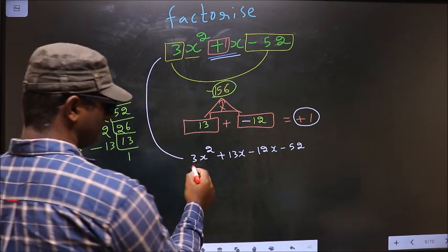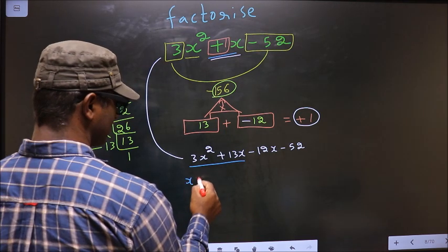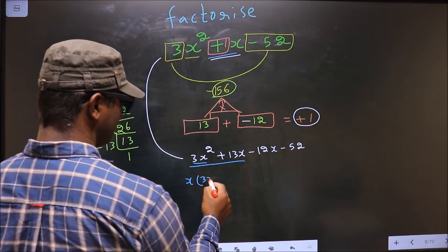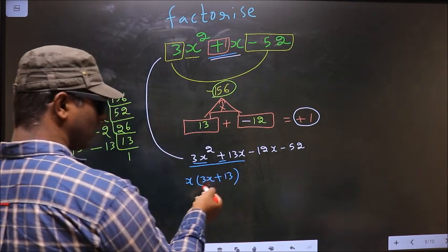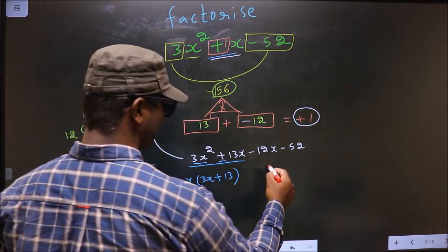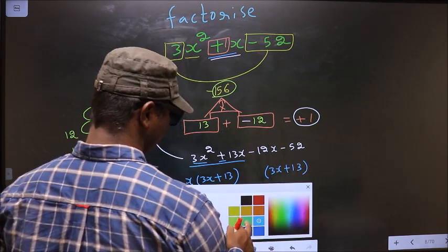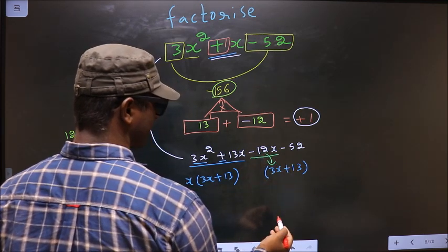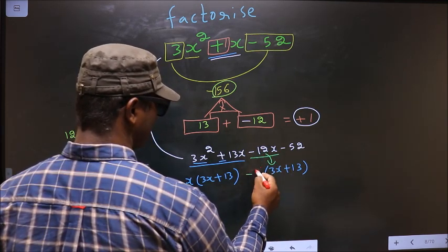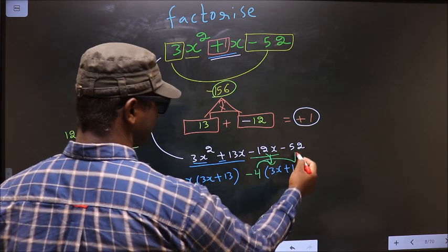Next. From these 2 terms what can you take out common? x. So here you get 3x and here you get +13. Whatever you have got here, here also you should get the same thing: 3x + 13. Now from this, 3x has gone inside, so outside you will be left with -4. Even if you multiply, still you get the same thing.